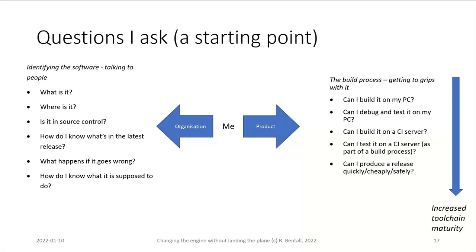Looking inside of the product: what about the build process? Can I build it on my PC? Can I debug and test it on my PC? Can I build it on a CI server? That series of questions about maturing the tool chain — the further you get down that list at the start, the easier your life is going to be. As you answer these questions, it will tell you a lot about not only the software but also the environment that produced it, and the values and capabilities of your customer. You're getting a lot of context that helps you understand how you can get the software over the finish line.